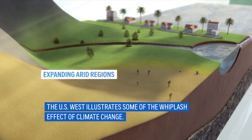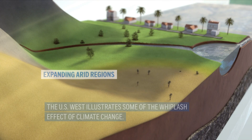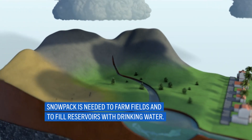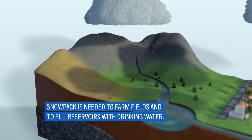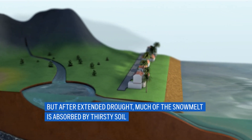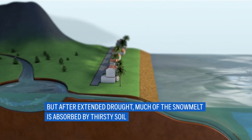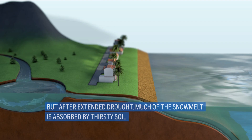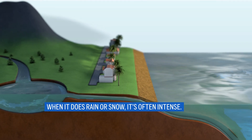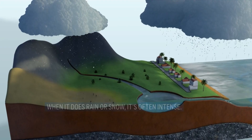The U.S. West illustrates some of the whiplash effects of climate change. Snowpack is needed to farm fields and to fill reservoirs with drinking water. But after extended drought, much of the snow melt is absorbed by thirsty soil instead of running into waterways. When it does rain or snow, it's often intense.